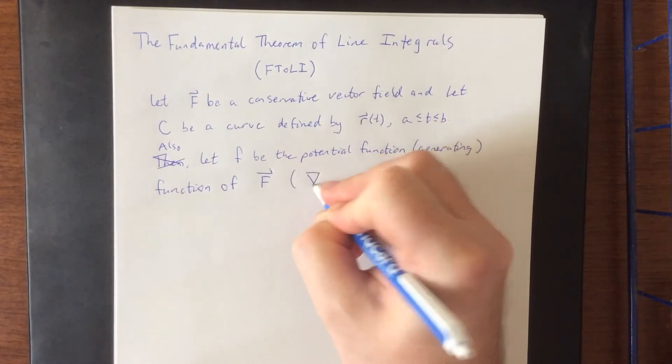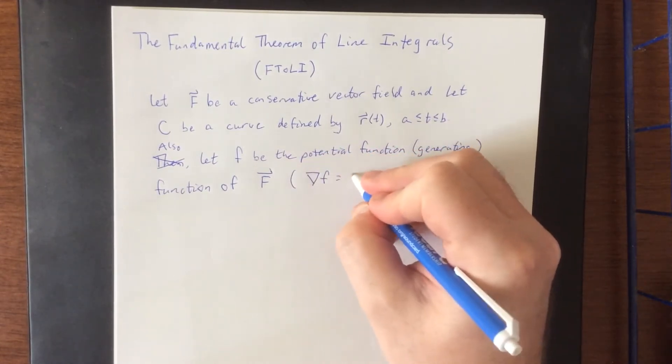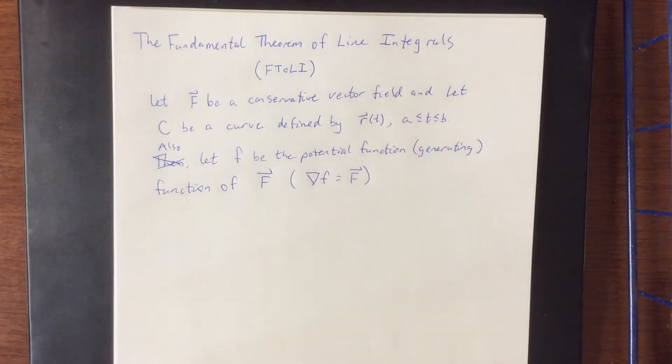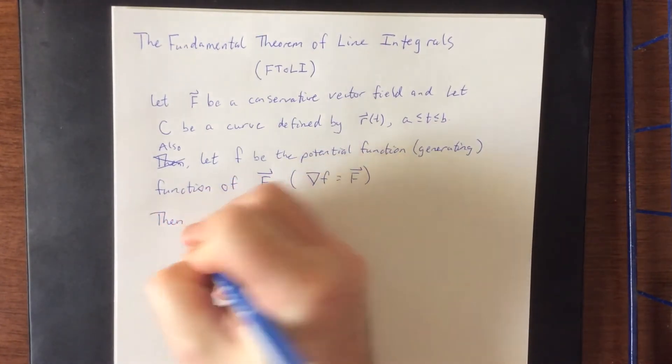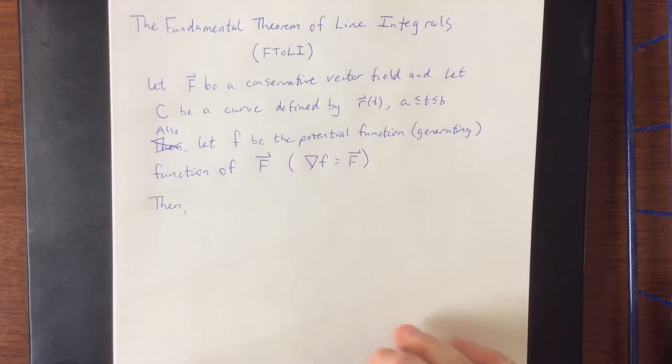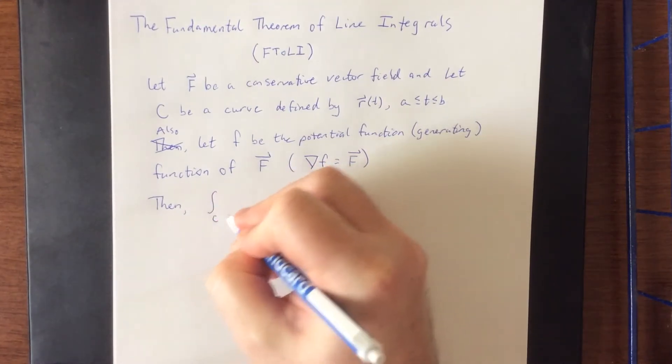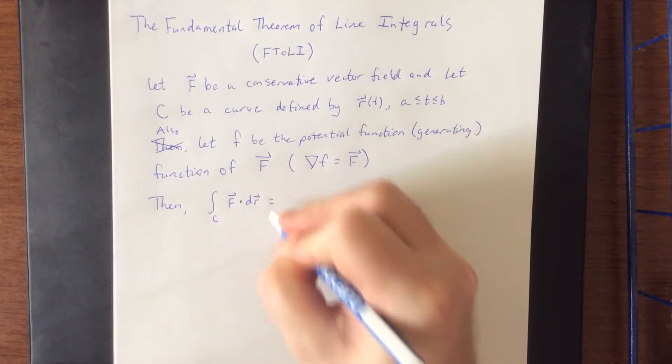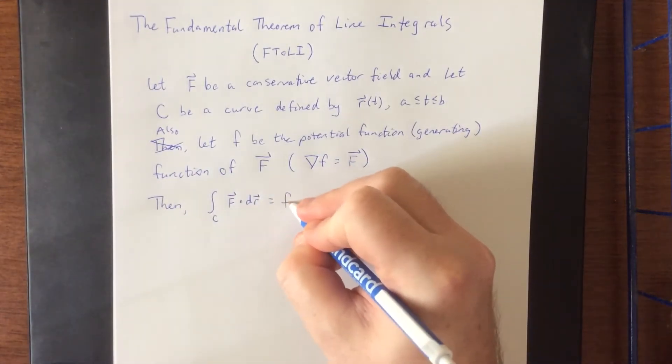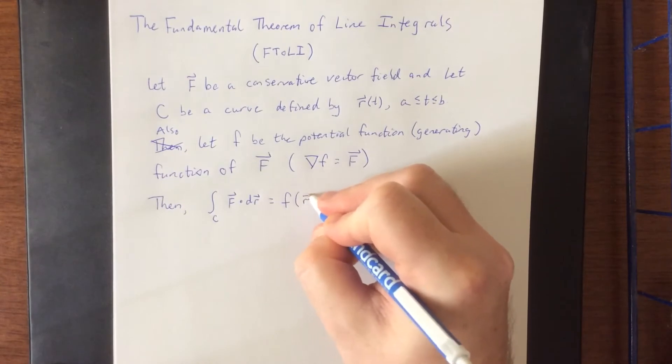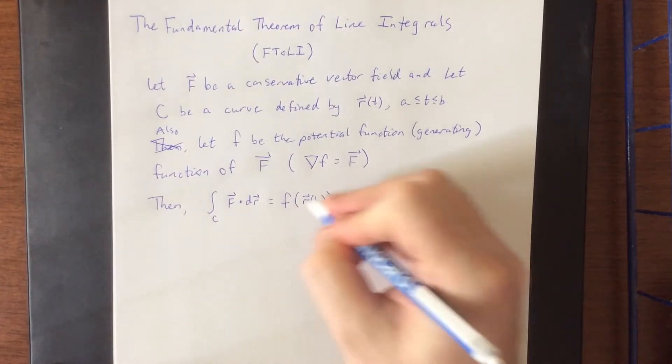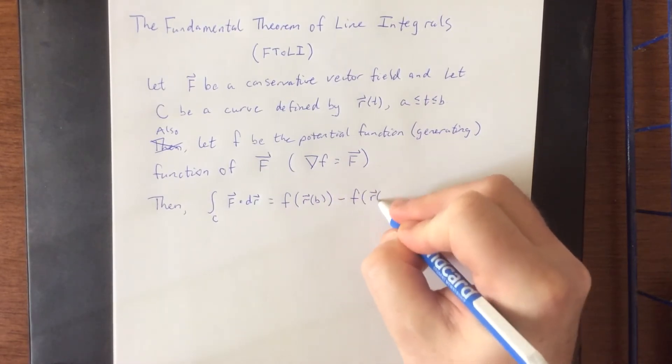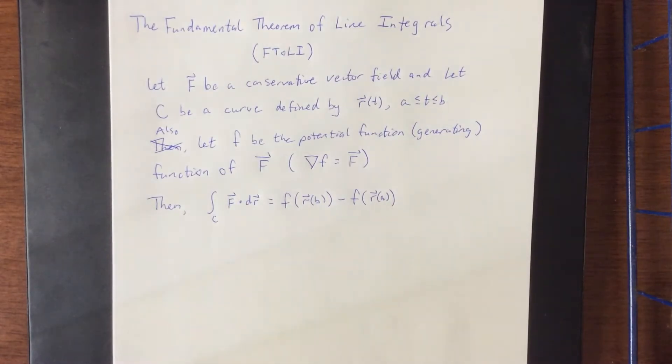of capital F. And just as a reminder of what that means for everybody, it means that the gradient function of little f would be the vector field F. The Fundamental Theorem of Line Integrals then says the following: the line integral over the curve C of capital F dot dr is going to be the generating function evaluated at T equals B, then plugged into the function F minus capital F of the initial point of the curve. That would be R of A.